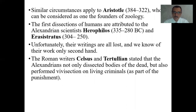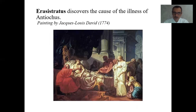The Roman writers Celsus and Tertullian stated that the Alexandrians not only dissected bodies of the dead, but also performed vivisection of living criminals. Here you see the painting by Jacques-Louis David, illustrating that Erasistratus discovers the cause of the illness of Antiochus.